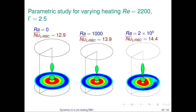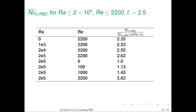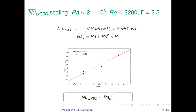For the parametric study, we looked at what happens in a lid-rotating case when heating is added. It is clear that increasing the Rayleigh number increases the Nusselt number. Tabulating all data, we found that for a fixed Reynolds number, increasing Rayleigh number increases the normalized Nusselt number. We then defined an effective Rayleigh number that combines contributions from the Rayleigh number and Prandtl number, and found that the modified Nusselt number scales with the effective Rayleigh number with an exponent near one-third.